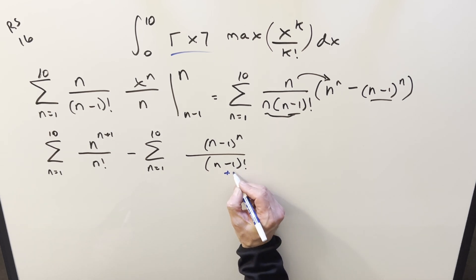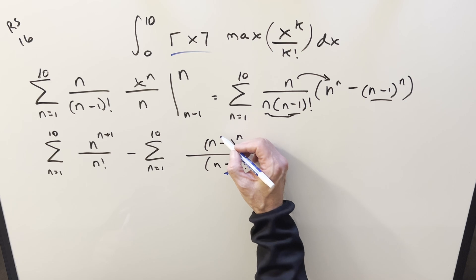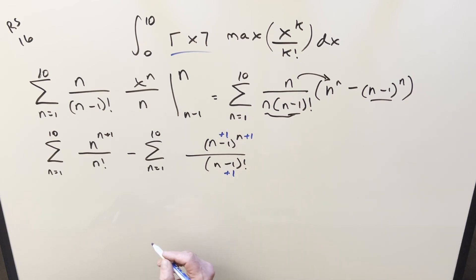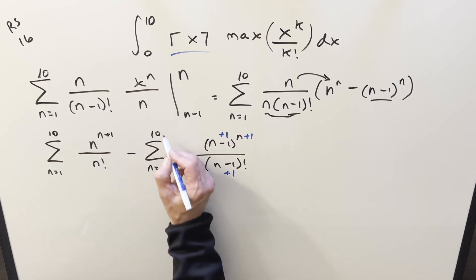What I can do for an index change, what if I add 1 here? I just need to do it everywhere. Add 1 here, add 1 here. And then over here, we just need to subtract 1.